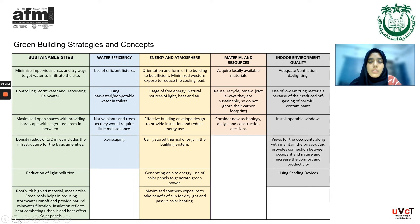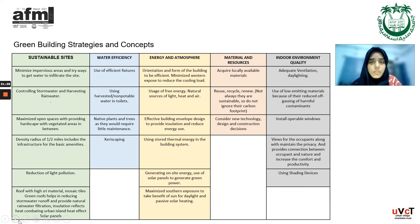For indoor environment quality: ensure adequate ventilation and daylighting, use low-emitting materials to reduce harmful contaminants, install operable windows, and maintain visual connectivity between the natural landscape and the user to promote inclusivity. Maintaining privacy while connecting occupants to nature increases comfort and productivity.